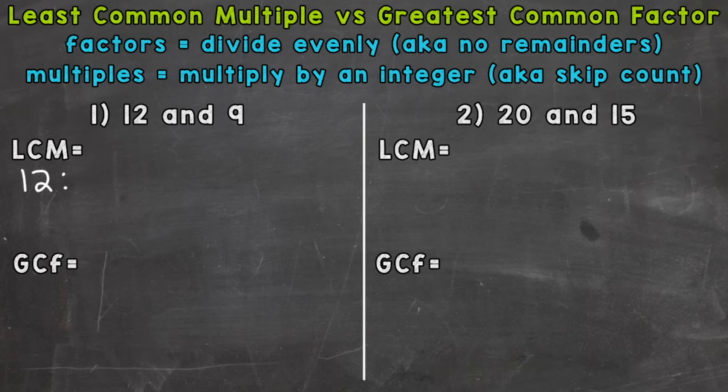And we could do this by skip counting. So we can think, well, 12 times one is 12, times two is 24, times three is 36, times four is 48, and times five is 60.